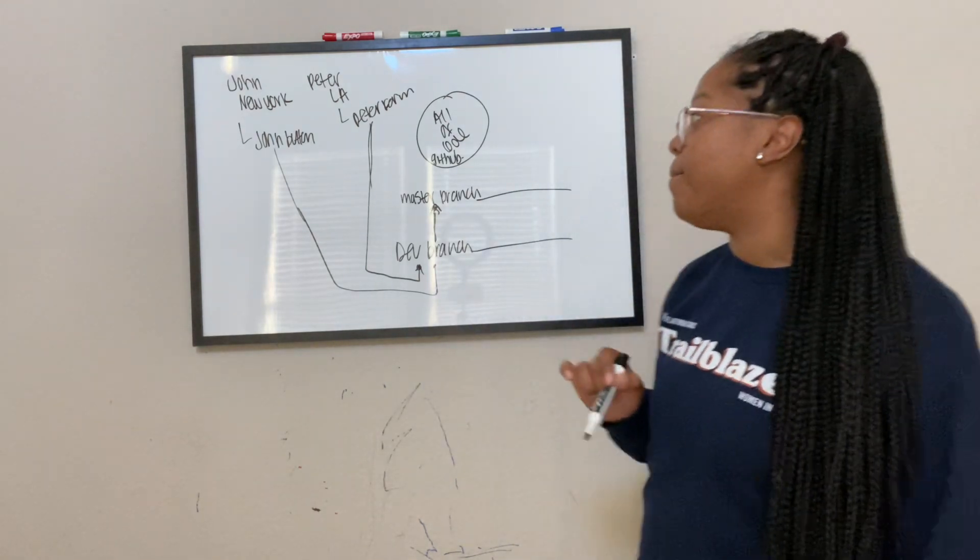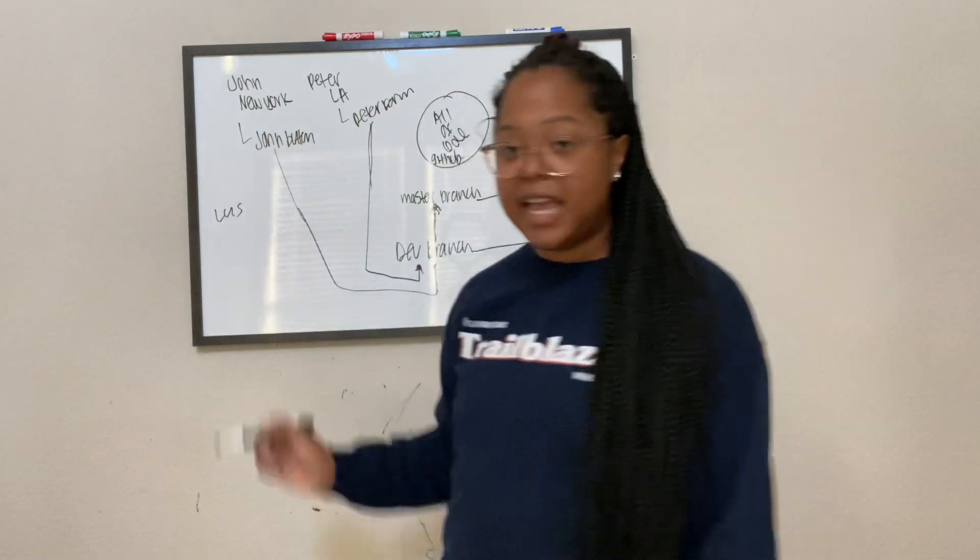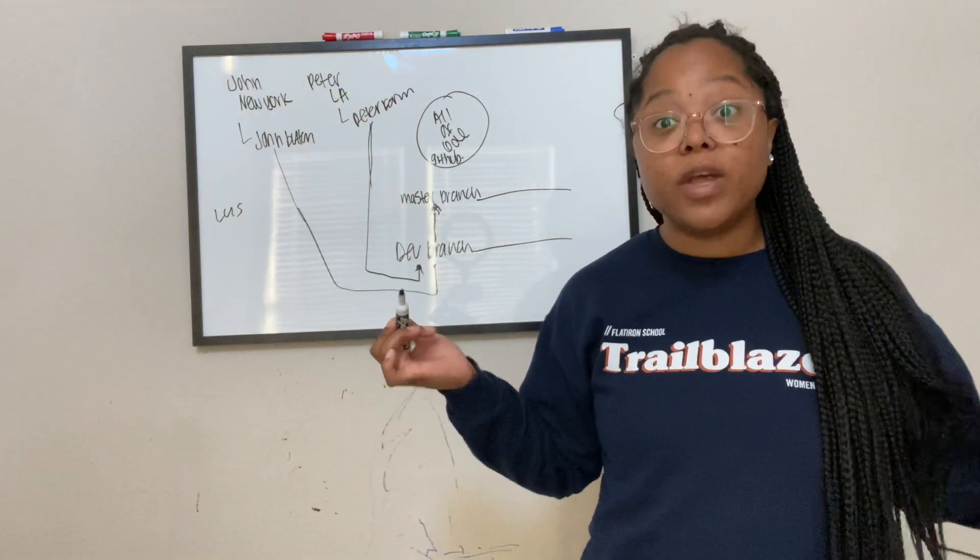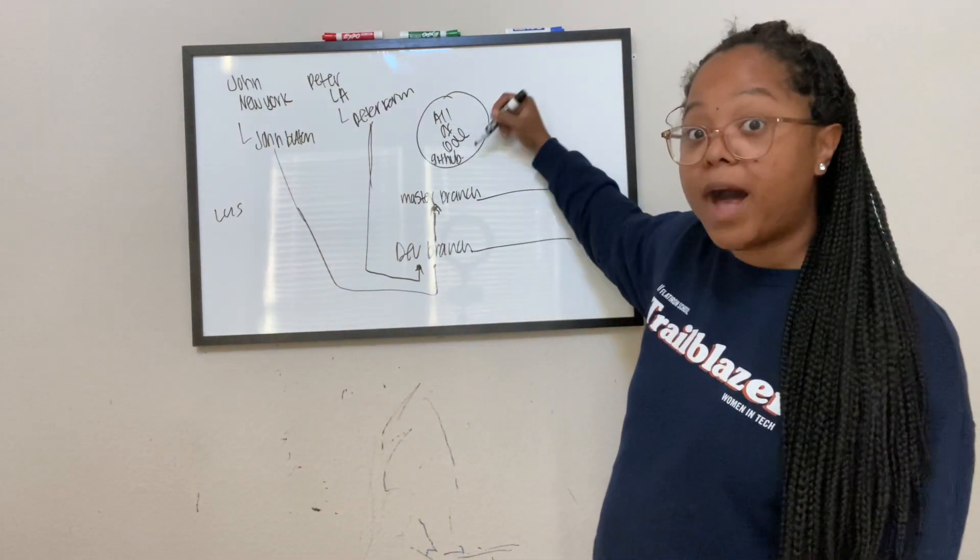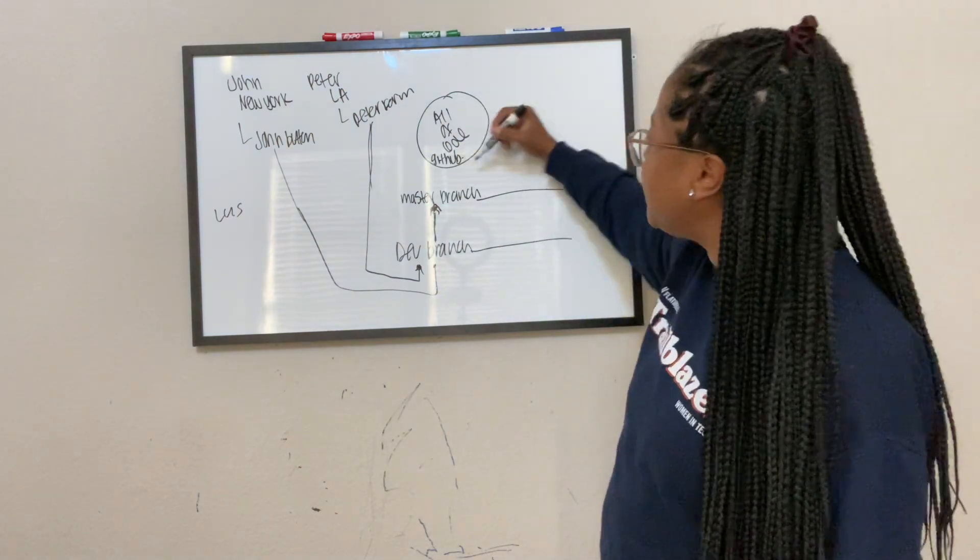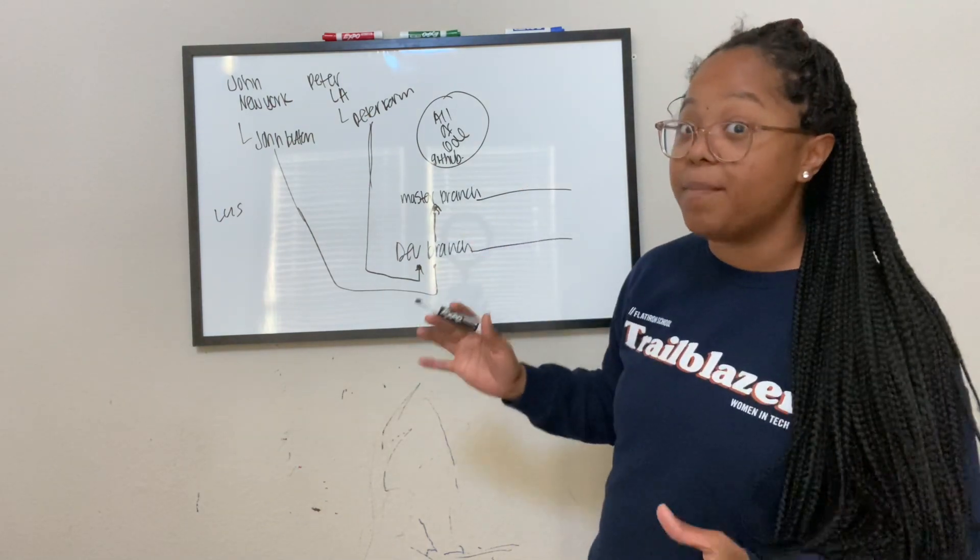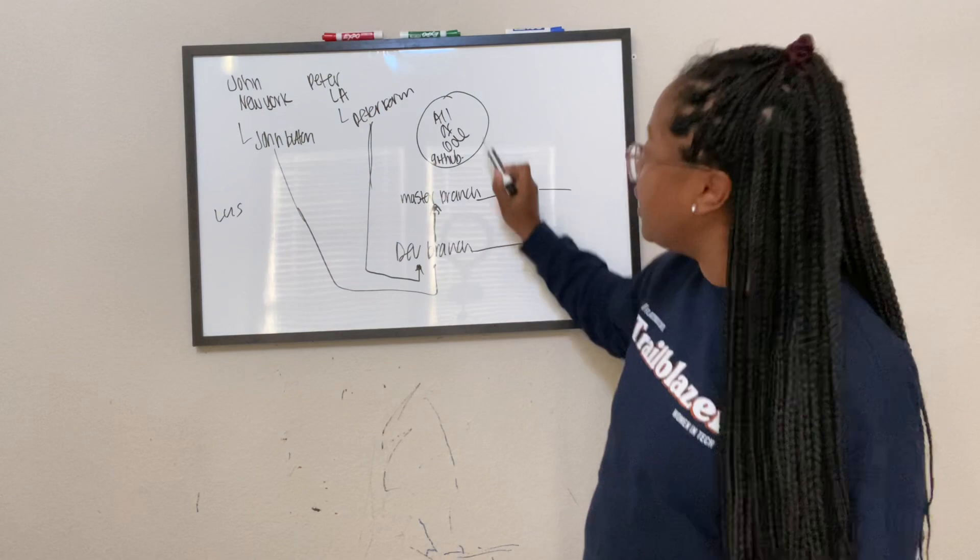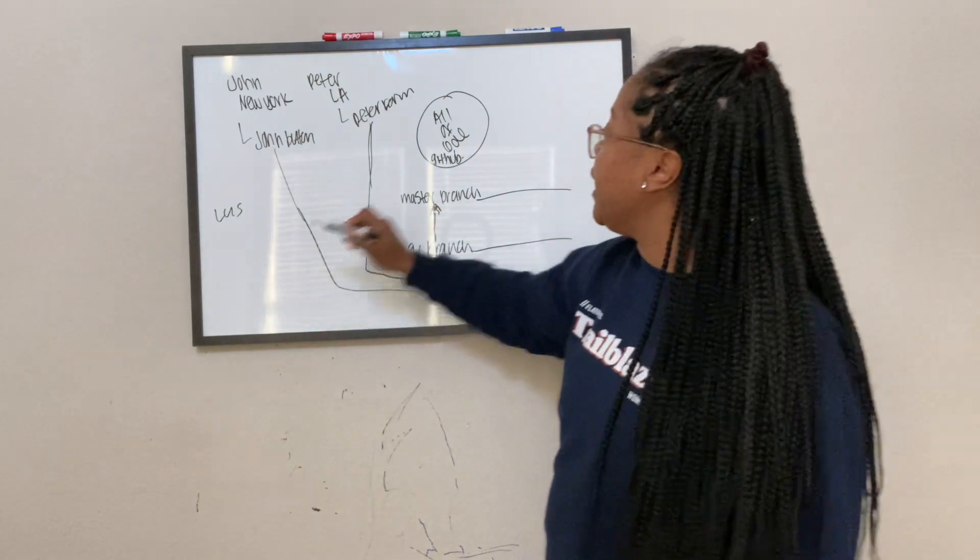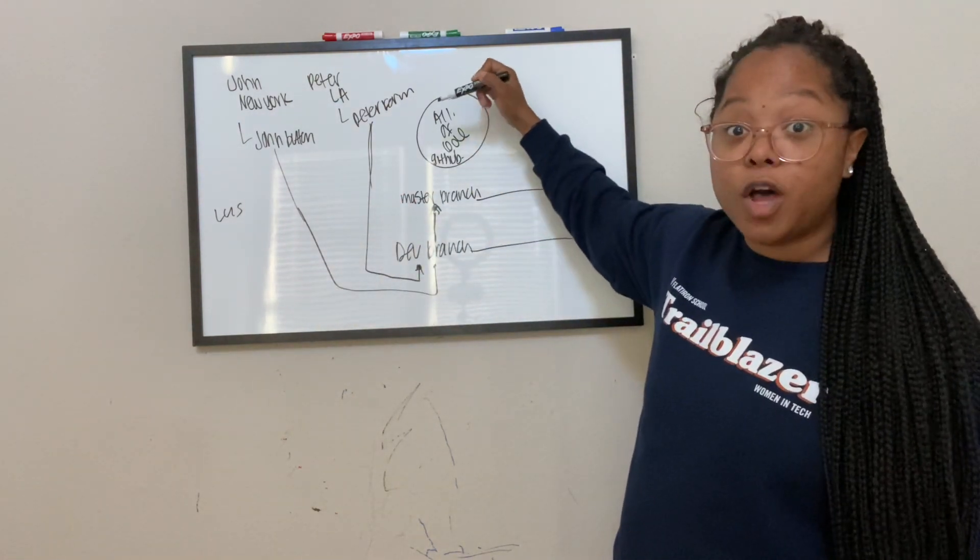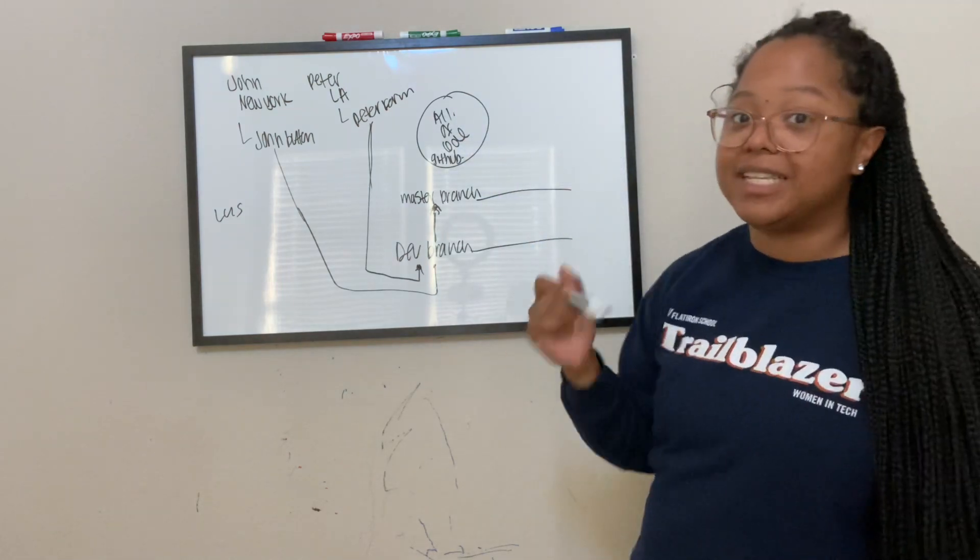I'm taking a step back. Say that Luis is now a new developer on the project. So what Luis would do is Luis would go into this remote repository that has all of the pristine, amazing code. This is the final, final, final version of the code, which is aka the master branch. The master branch is all of the code that's approved and good to go for the project.